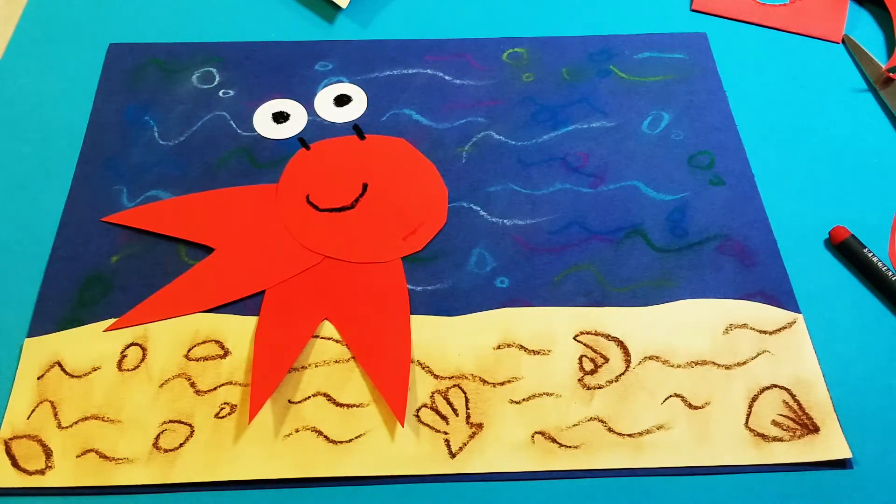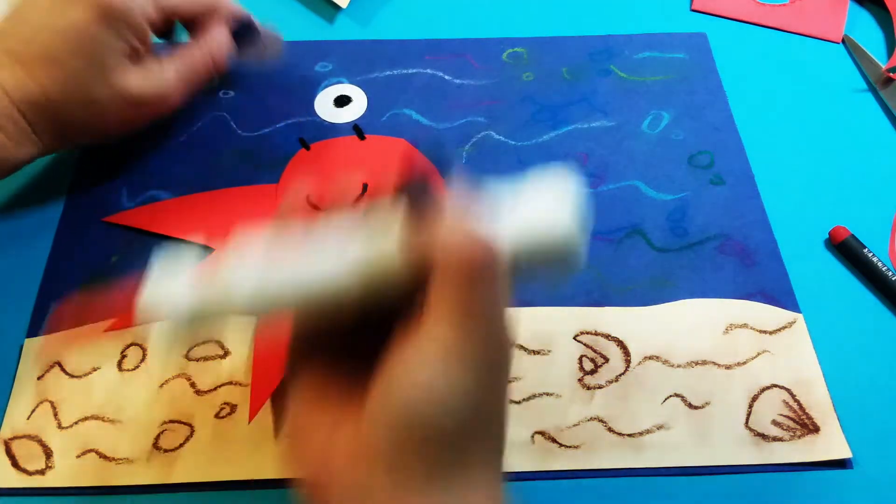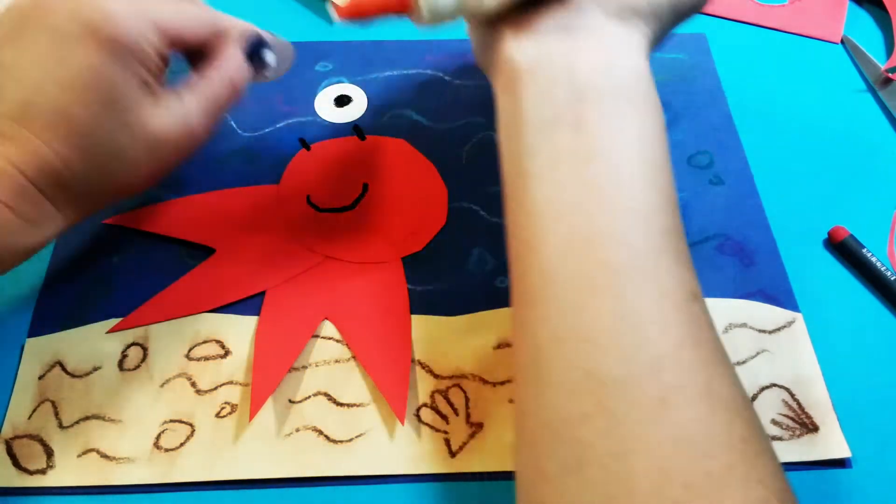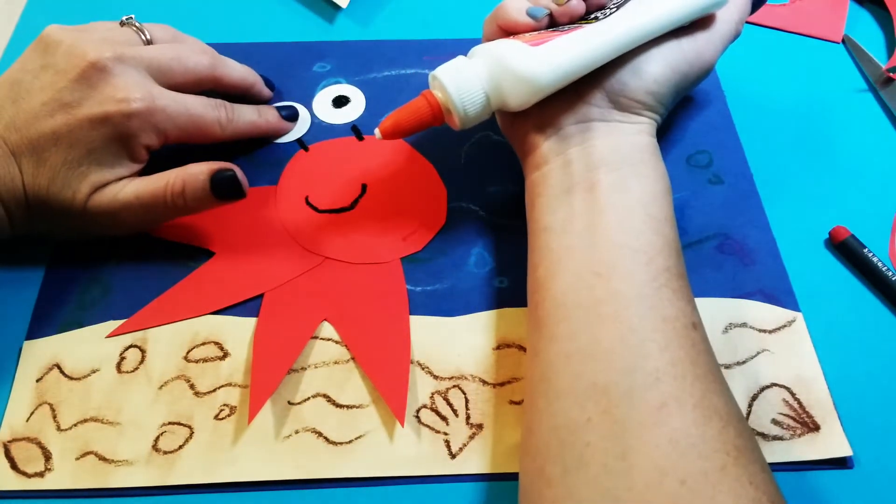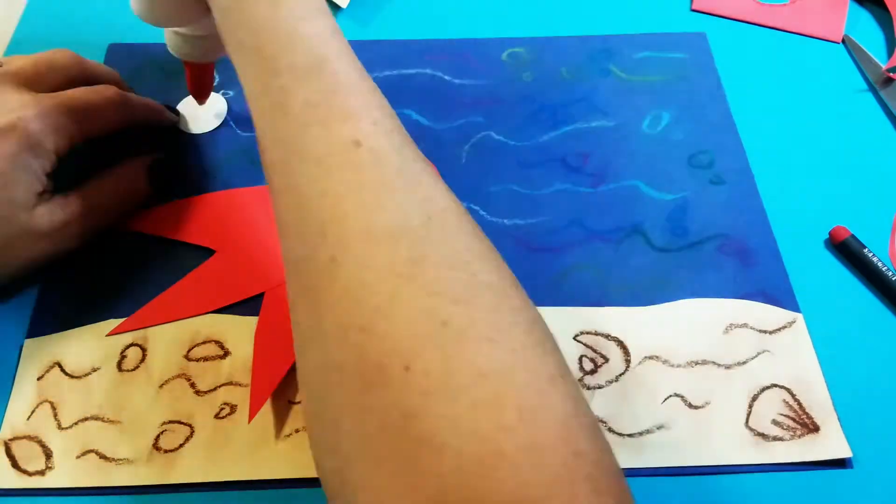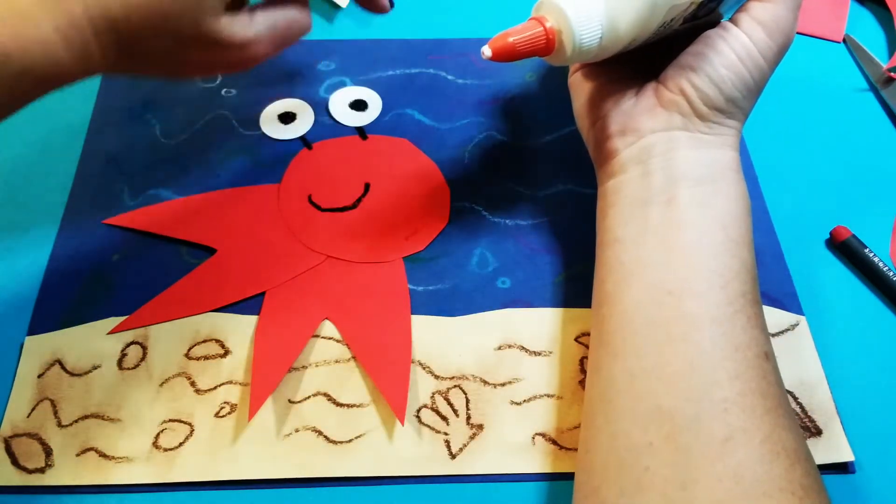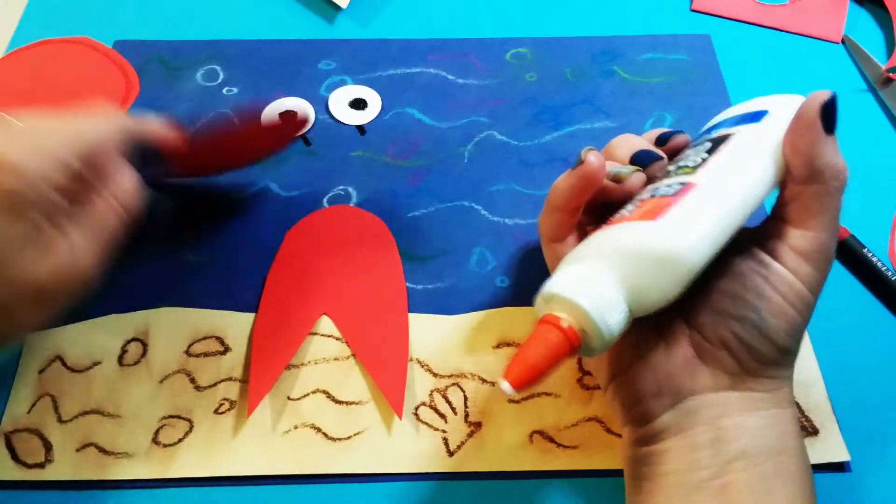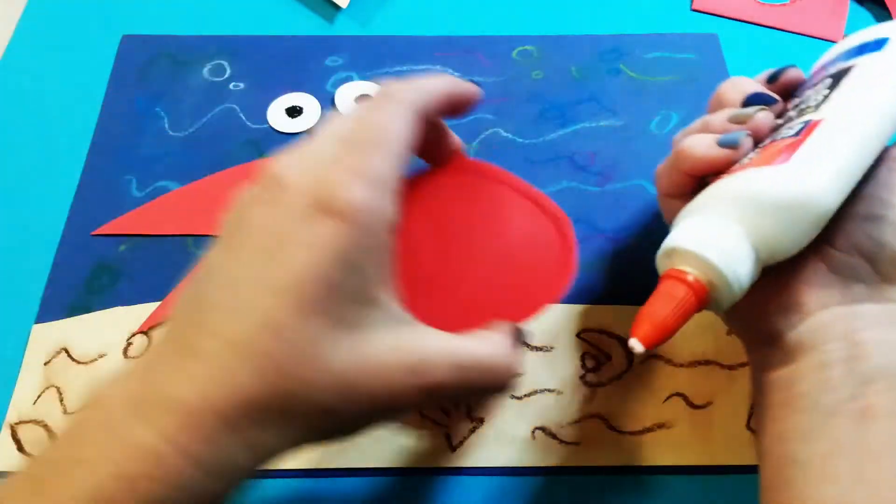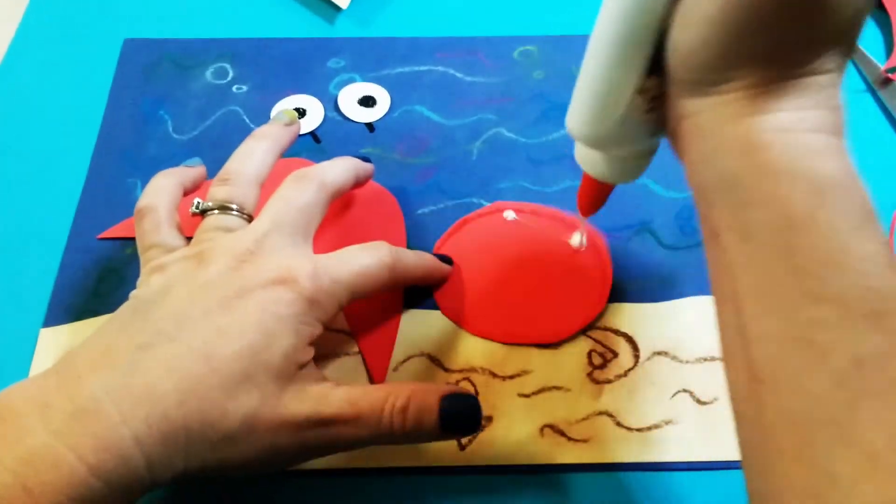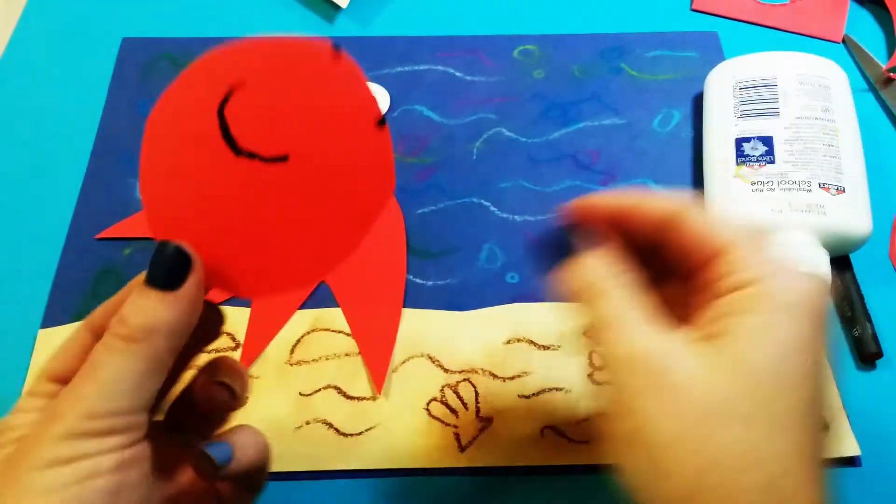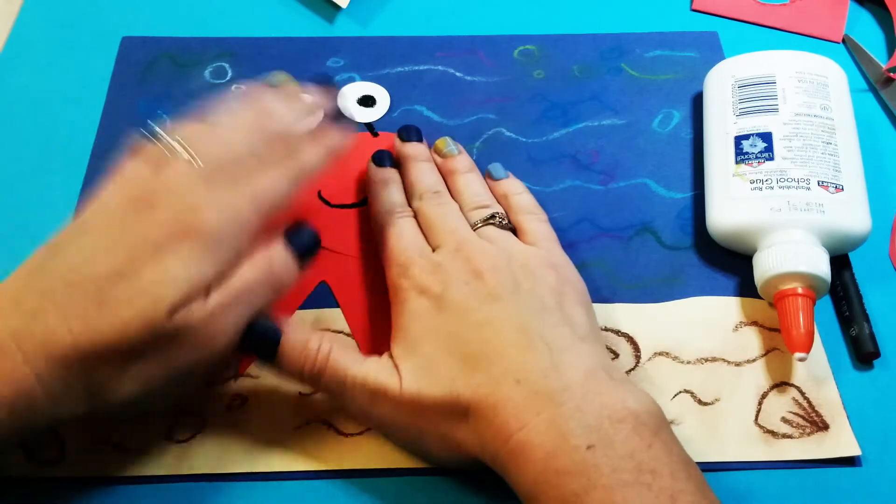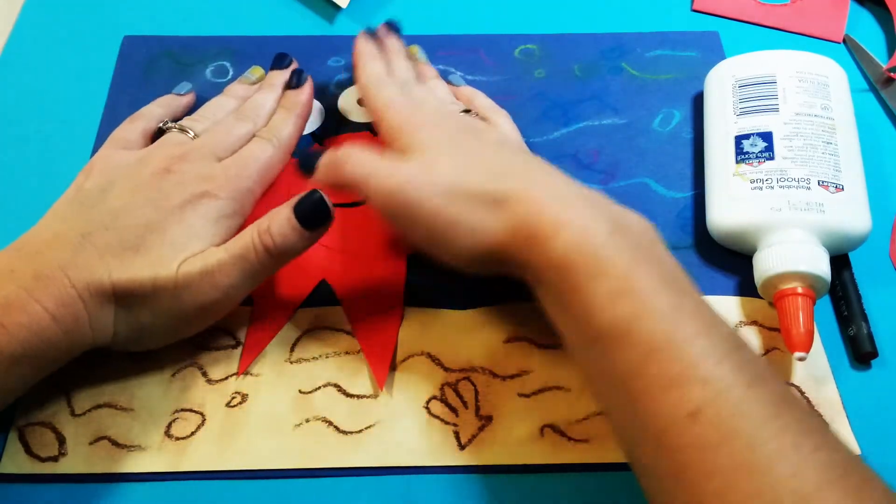And then we can get our glue and start gluing down. So because you already drew those lines, we're going to start with the eyes because this will be the easiest thing. You just put a dot of glue and right on top of that black line you'll add one eye and then the other. And then we can glue down our claws here. And finally we can glue down our face. And I'm going to try to line up those little black lines so that everything lines up and then just press down to make sure everything stays in place.